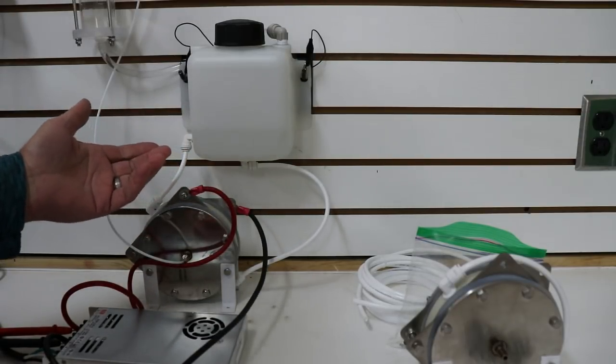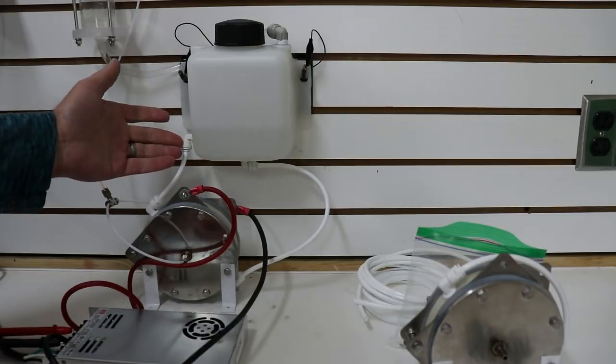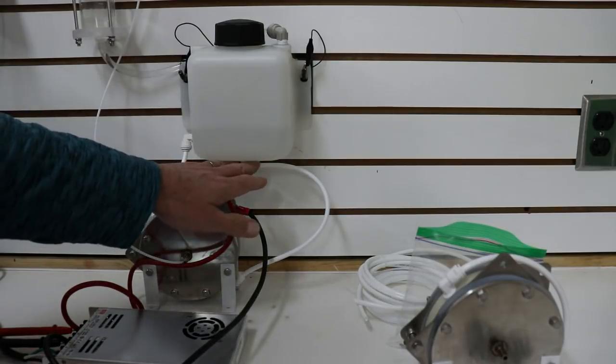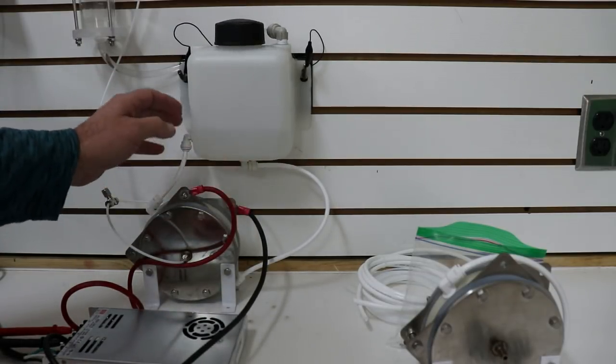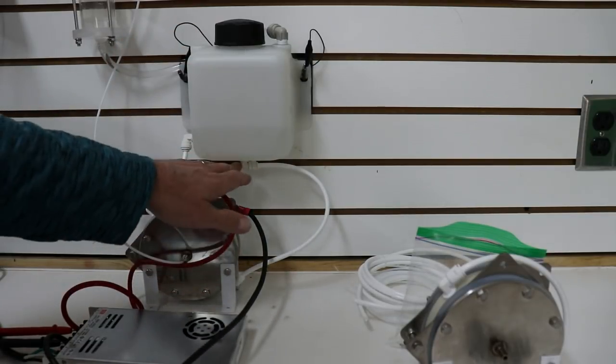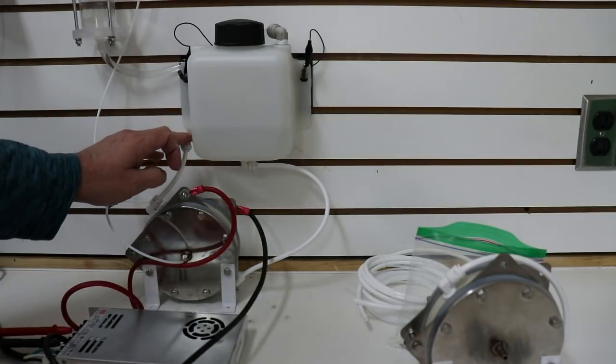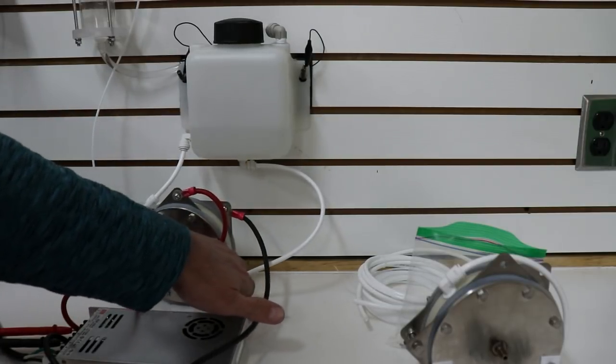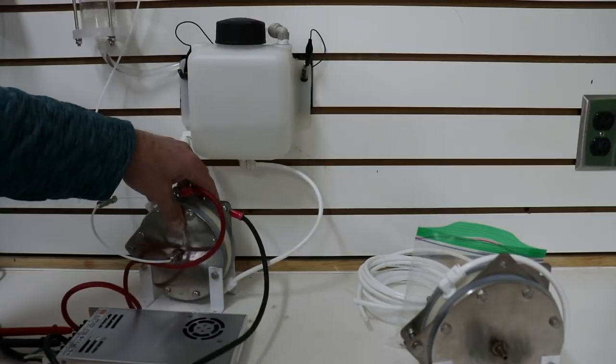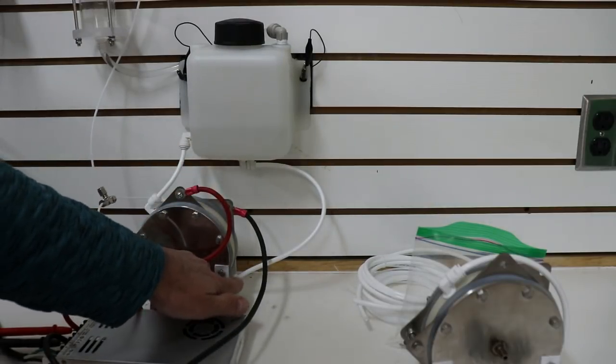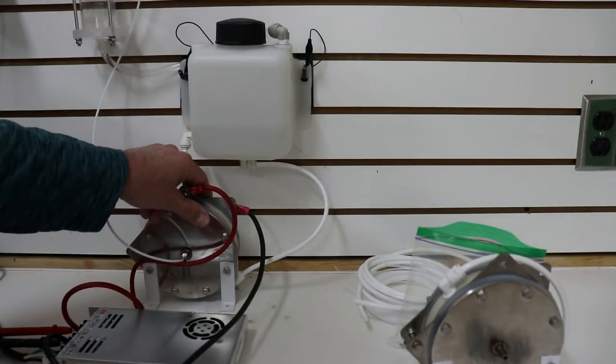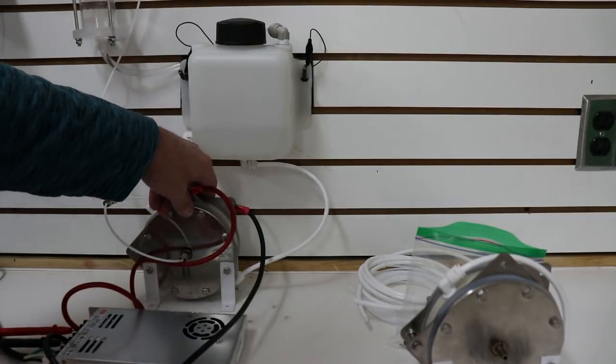On your reservoir, you're going to need two ports minimum. You've got an output port and an input port. And you're going to connect a hose from the output port, which should be in the bottom. It should be lower than the input port. And connect it to the bottom of the generator. This generator has quarter inch push connect fittings. So any quarter inch outside diameter hose will work.